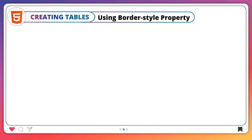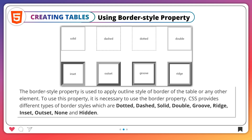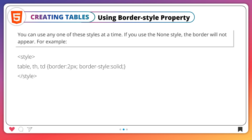Using the border-style property: the border-style property is used to apply the outline style of borders of the table or any other element. To use this property, it is necessary to use the border property. CSS provides different types of border styles: dotted, dashed, solid, double, groove, ridge, inset, outset, none, and hidden. You can use any one of these styles at a time. If you use the none style, the border will not appear.